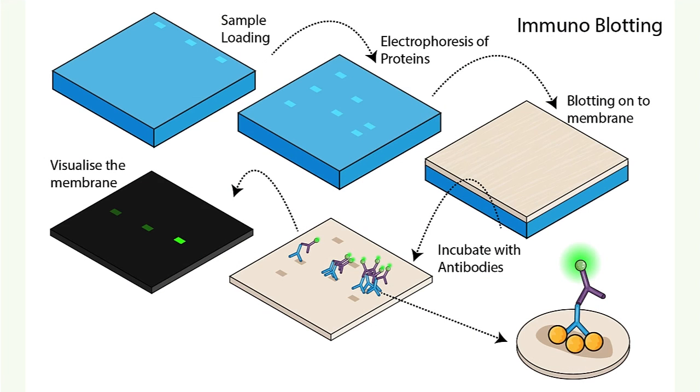In Western blot, sample protein is separated by gel electrophoresis and transferred to a membrane. Labeled antibodies are used to bind relevant protein. So here we are testing the final product of a gene.